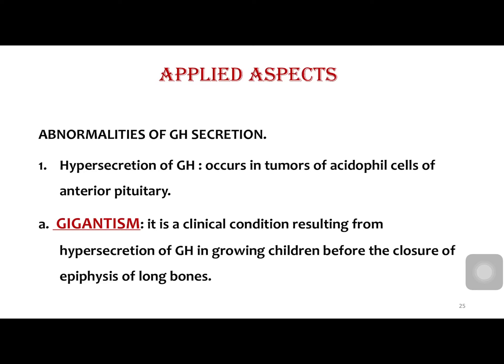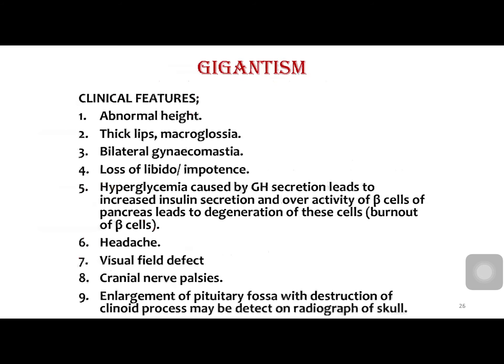Coming to abnormalities — hypersecretion before fusion of the epiphyseal cell plates causes gigantism. Gigantism is a clinical condition resulting from hypersecretion of growth hormone in growing children before closure of epiphyseal plates. Clinical features include abnormal height, thick lips, macroglossia, bilateral gynecomastia, loss of libido, impotency, hyperglycemia, headache, visual defects, cranial nerve paralysis, and enlargement of the pituitary fossa. In clinical images, a person suffering from gigantism is very tall compared to a person of normal height.